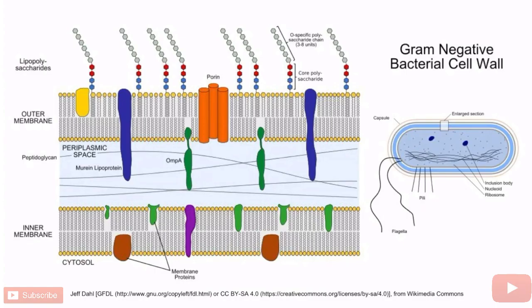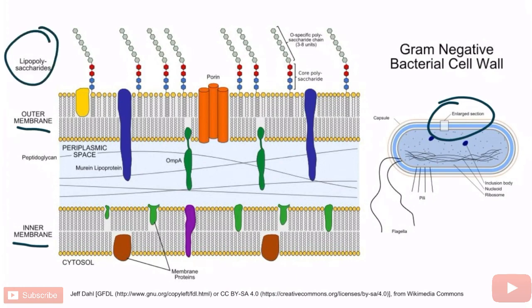This is an image of the bacterial cell wall of gram-negative organisms. We've zoomed in on the inner membrane and the outer membrane. This image shows lipo-oligosaccharides embedded in the outer membrane. Neisseria contains lipo-oligosaccharides, so they would look like these structures on the outer membrane of the cell wall.